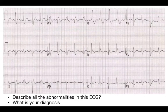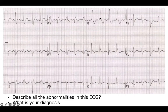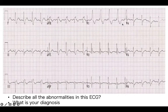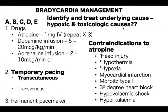As you can see on this ECG, you have right bundle branch block combined with left axis deviation — this is a typical example of bifascicular block, and we should be able to quickly recognize this.